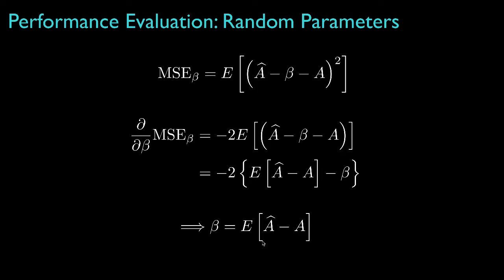So in almost every situation, when we determine that an estimator of a random parameter is biased, we can modify that estimator by simply subtracting the bias, and then not only will we have an unbiased estimator, we'll decrease the mean square error relative to the biased estimator.